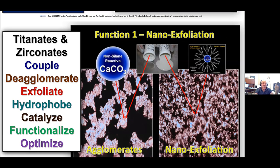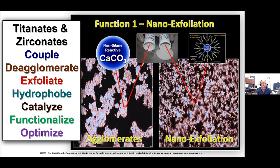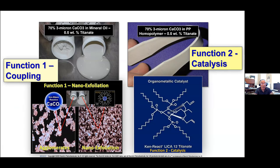When you do that, you've got a continuous phase, and all of the good properties are maintained over the long term. Because you deagglomerate, you exfoliate, you're hydrophobic, you catalyze, and you're functionalized — therefore you optimize. That's the whole purpose of the function.